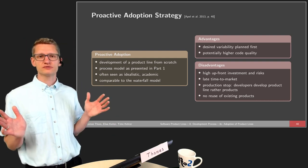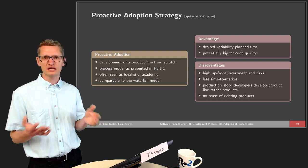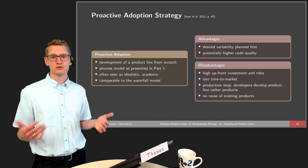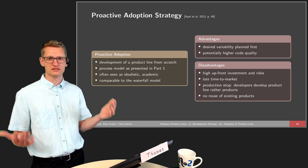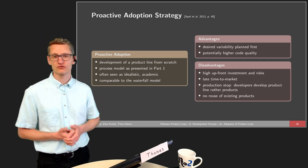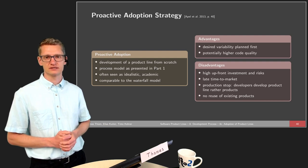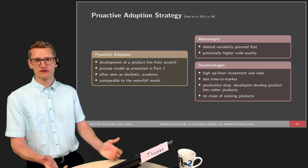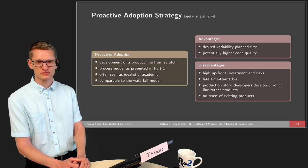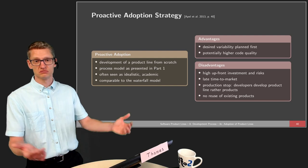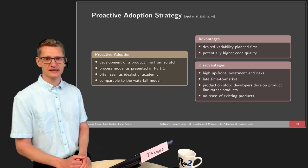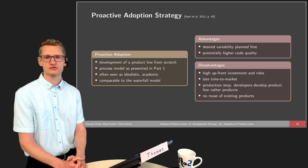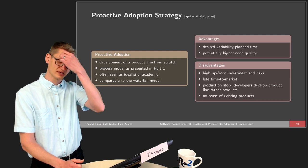The advantages are that we have the desired variability planned first — we plan what we want to do and then realize it — potentially yielding higher code quality if we successfully envision the right extensions upfront. The disadvantages are the high upfront investment and risk: if you develop for one or two years without making any money from the product line, you could arrive too late to market because competitors have already produced products. This is a frequent reason why the pure proactive strategy is not widely applied in practice.